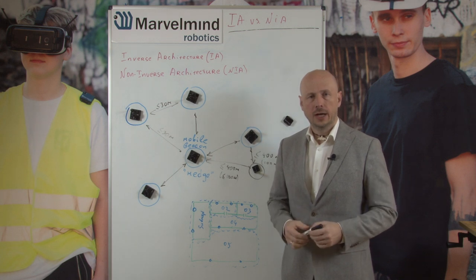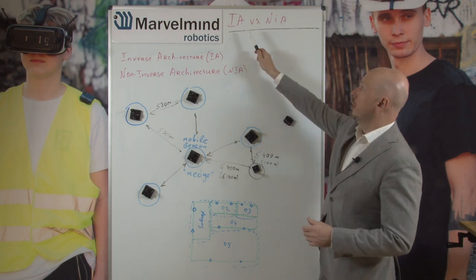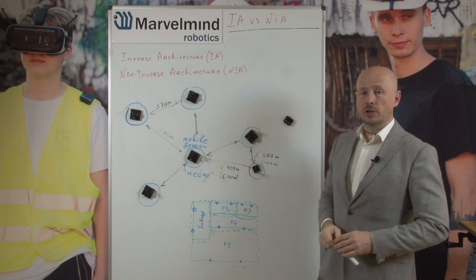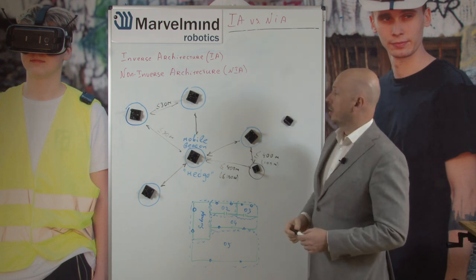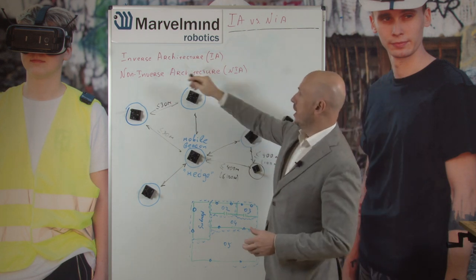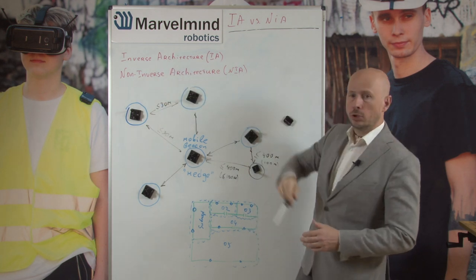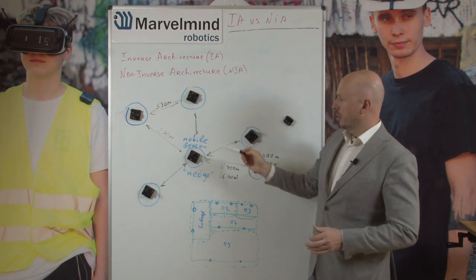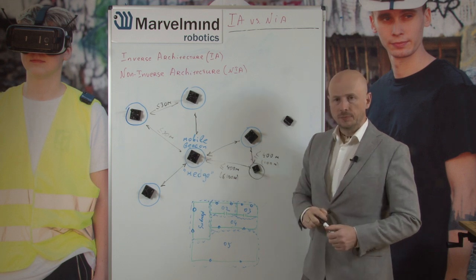Hello colleagues, today I will be talking about inverse and non-inverse architecture. The difference between IA (inverse architecture) and NIA (non-inverse architecture) is in the emitting beacon.